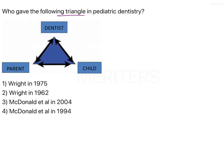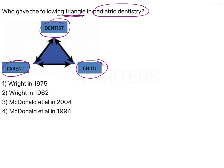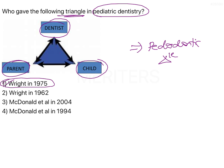Who gave the following triangle in pediatric dentistry? In this triangle there is a dentist, a parent, and a child — this is the paedodontic triangle. This triangle was first given by Wright in the year 1975.